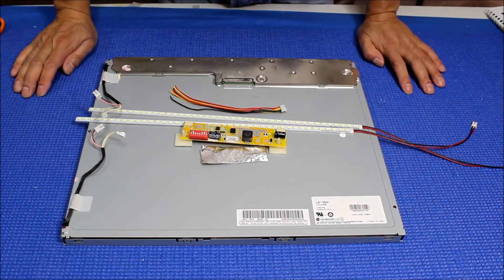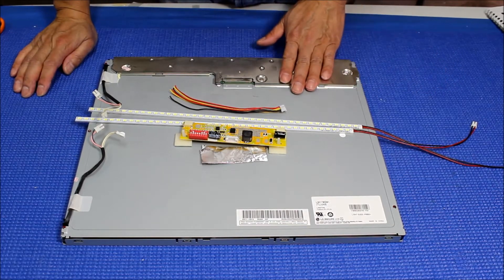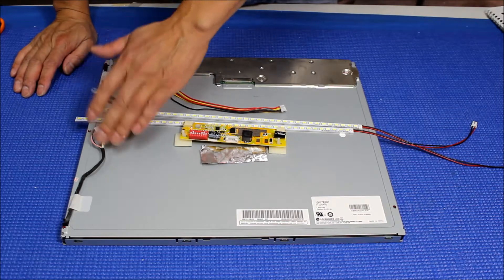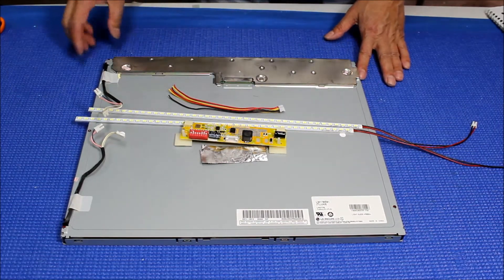Hello, in this video I'm going to show you how to upgrade this 17-inch LG Philips screen from CCFL to our UB70 series sunlight-readable LED kits.